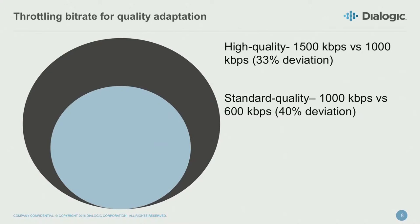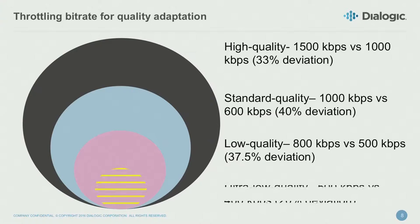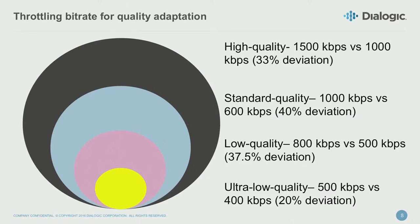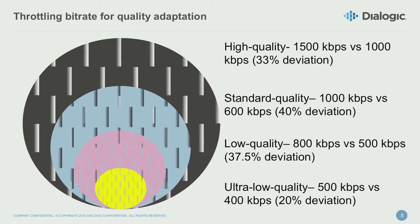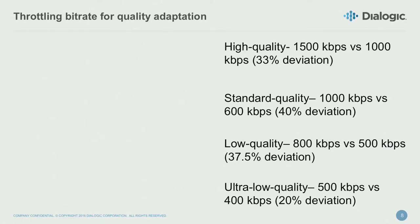I took it down a notch to 1,000 kilobits and then 600 — a 40% deviation. Low quality was at 800 and 500. Then I really wanted to stress it, so I brought it down to ultra low quality: 500 and 400. And then I wanted to cause some chaos by introducing packet loss, ramping it from 0% up to 20%.